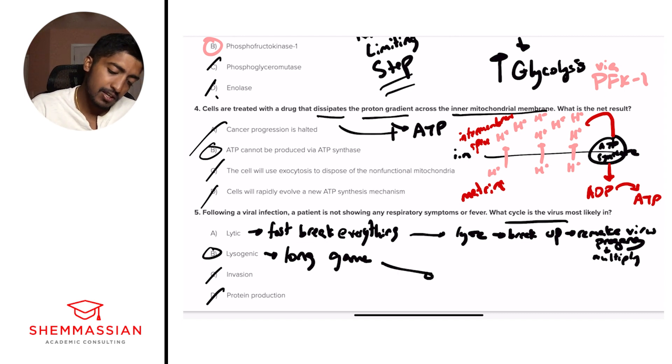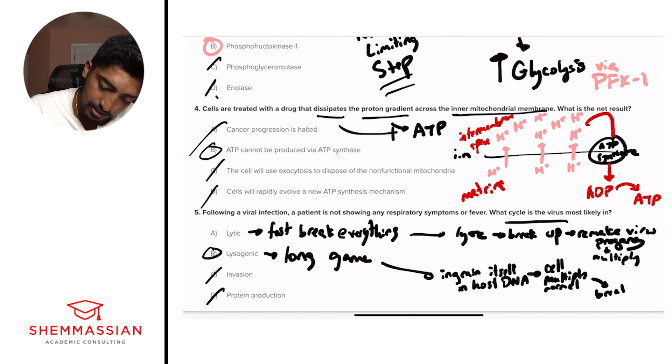The lysogenic is playing the long game. And so it's going to ingrain itself in host DNA. Allow the cell to multiply normally. And then break cell with stress. So the idea is that it sneakily just attaches itself to host DNA and the host thinks it's part of the normal DNA. So it's going to replicate, replicate, replicate with more and more cells. And all of a sudden, we're going to have some sort of stress. Some sort of stress from environment, from whatever, that'll just cause everything to be chaos.